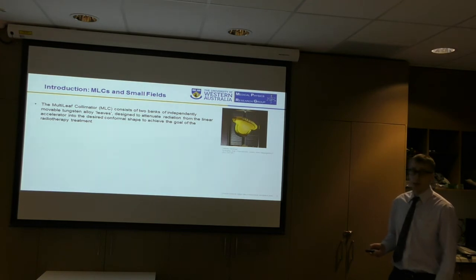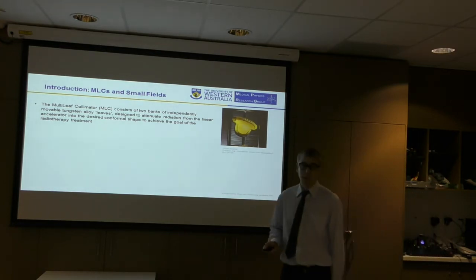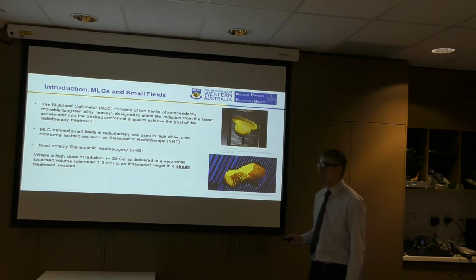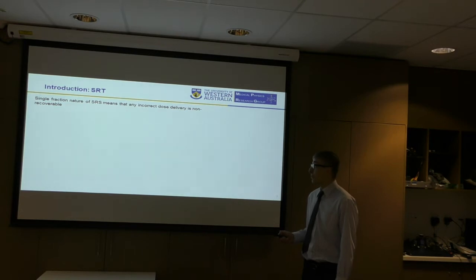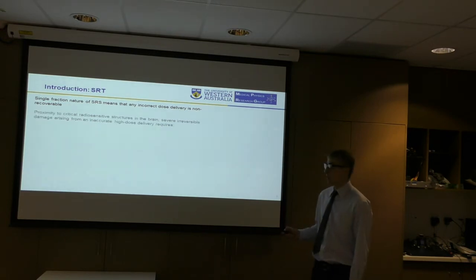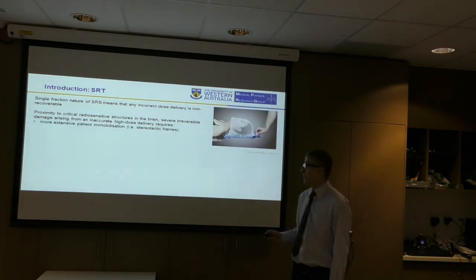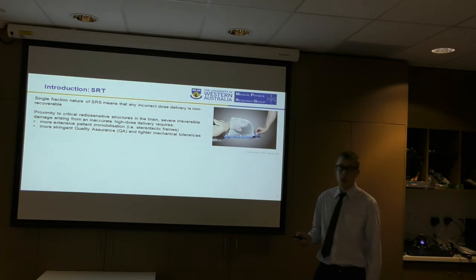Multi-Leaf Collimator consists of two banks of independently movable tungsten leaves designed to attenuate radiation from the linear accelerator into the desired conformal shape to achieve the goal of radiotherapy treatment, be it cure or palliation. MLC-defined small fields in radiotherapy are used in high-dose, ultra-conformal techniques such as stereotactic radiotherapy, most notably stereotactic radiosurgery, where a high dose of radiation is delivered to a very small localized volume to an intracranium target in a single treatment session. The single-fraction nature of stereotactic radiosurgery means that any incorrect dose delivery is non-recoverable. Proximity to critical radiosensitive structures in the brain, severe irreversible damage arising from inaccurate high-dose delivery requires more extensive patient immobilization compared to normal external beam radiotherapy, more stringent quality assurance and tighter mechanical tolerances. And of course, correct positioning of the MLC collimation system is of the utmost importance.